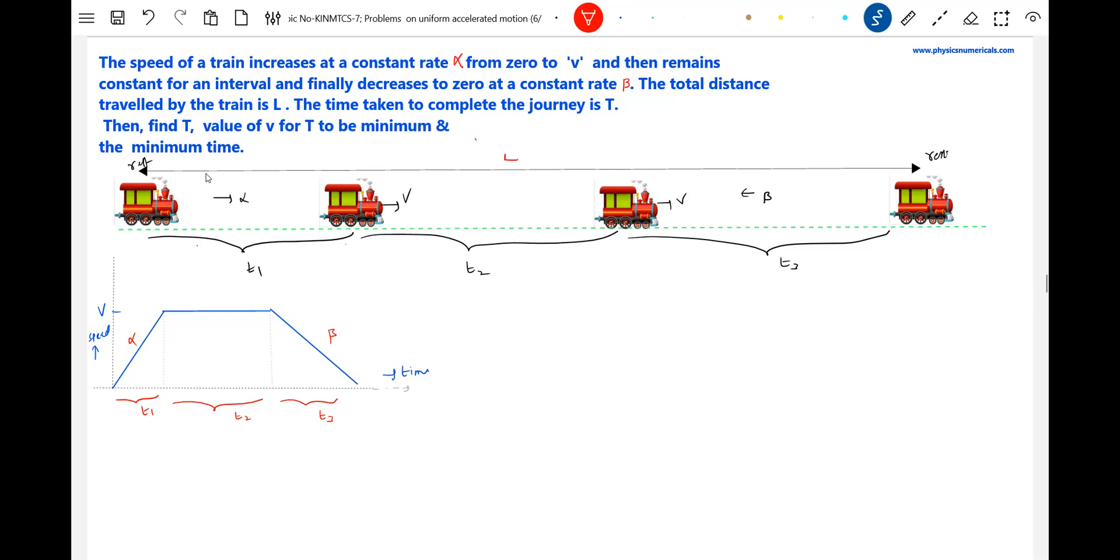Okay, first let's write all the equations for accelerated motion. v equals zero plus alpha t1, which is equal to alpha t1. Alpha is acceleration here. It will accelerate and acquire velocity v, then uniform velocity motion, then it will undergo retardation. Final velocity zero, initial velocity is v, retardation beta, time for retardation let it be t3, t1, t2, t3 we assumed.